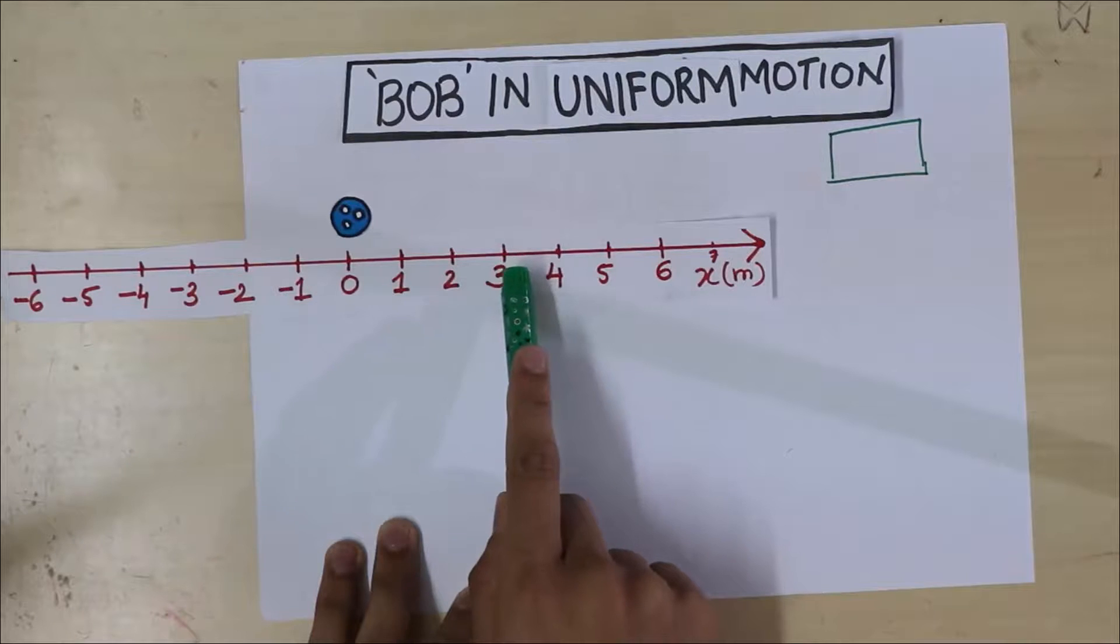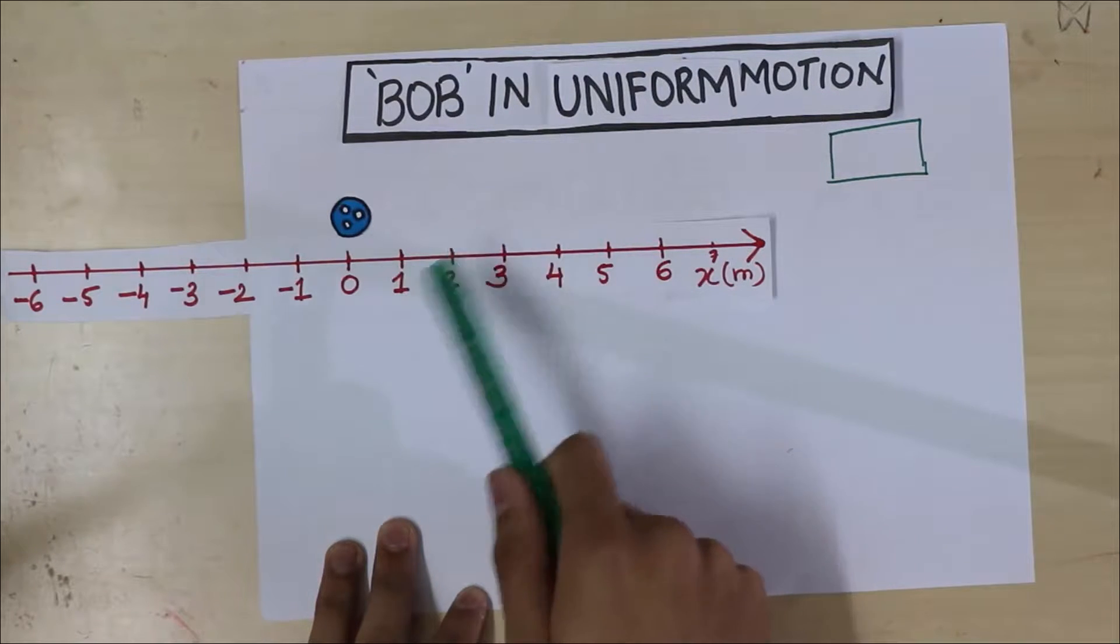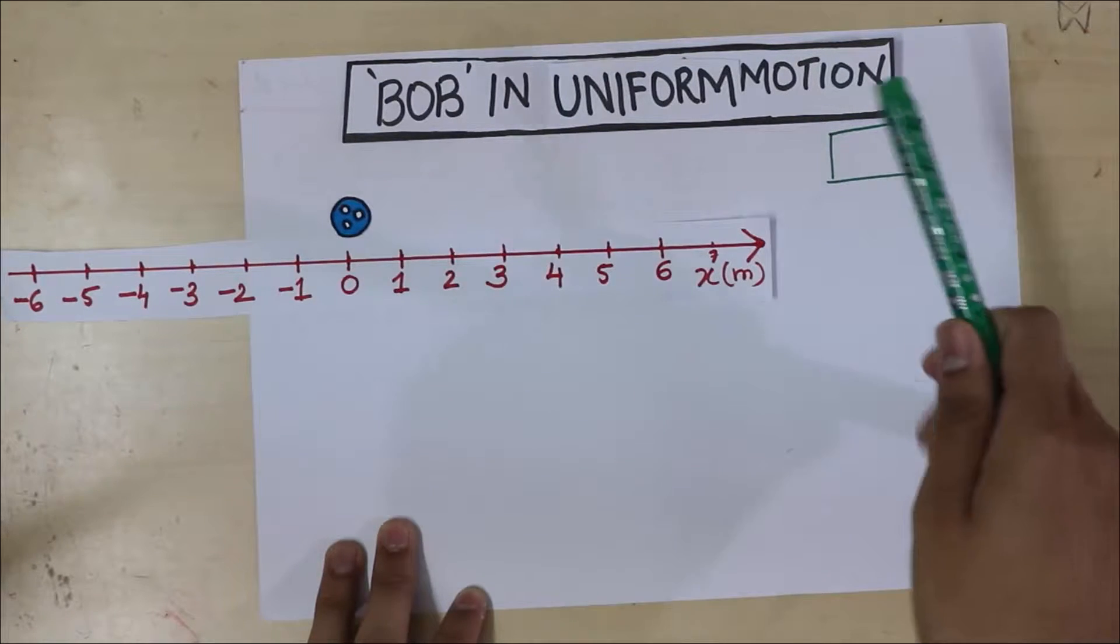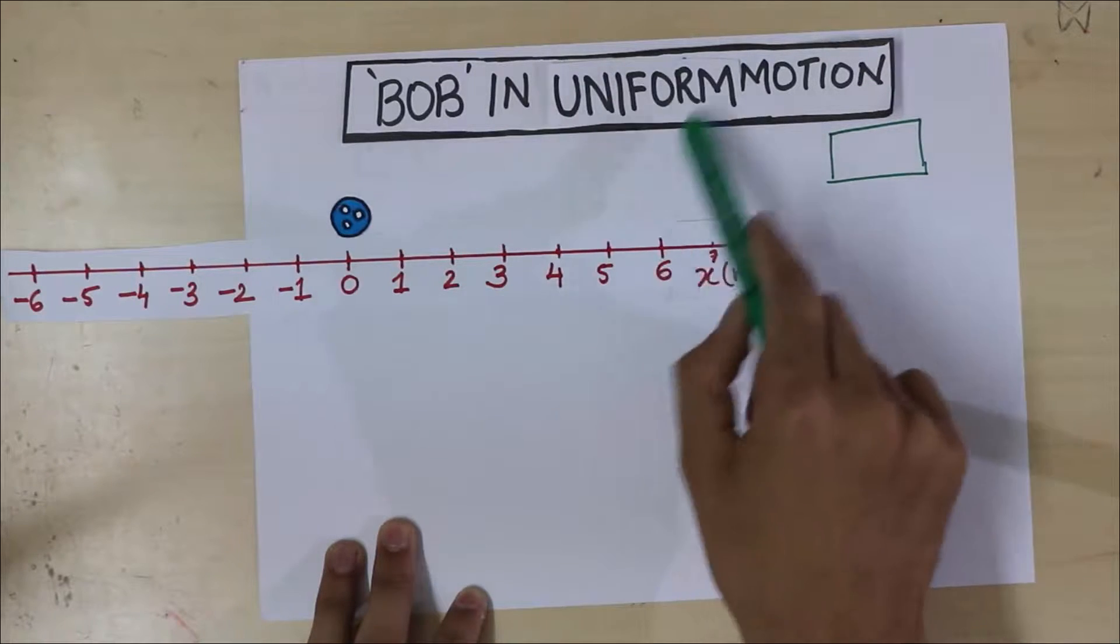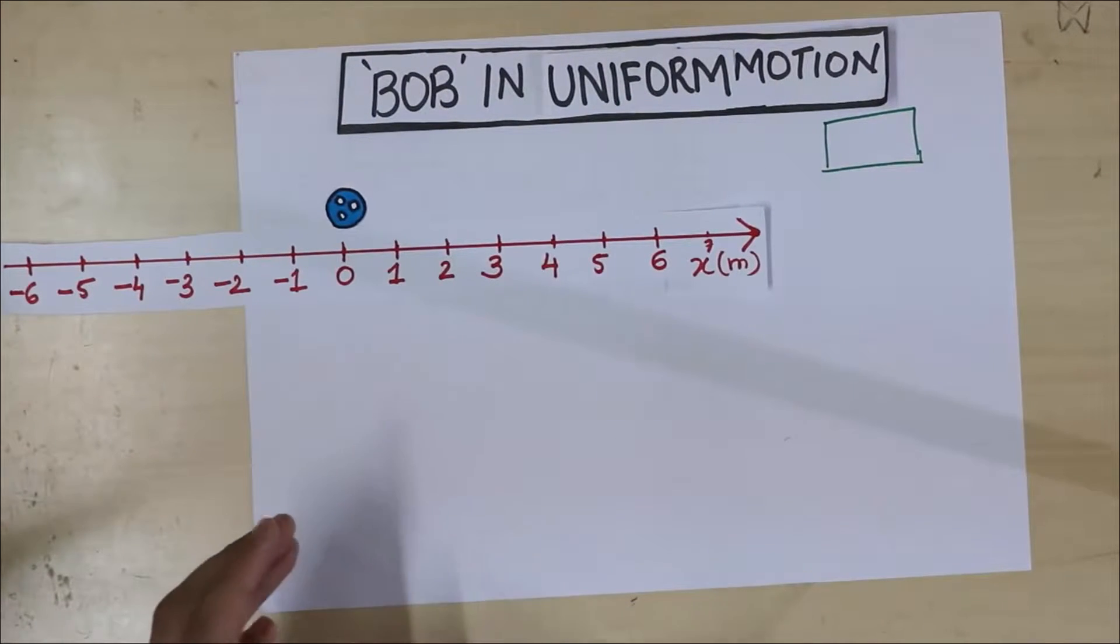Then I want you to carefully look and see how the position of Bob changes as time passes by. And maybe you'll get an idea of what is uniform in this uniform motion. Alright, so let's redo it.